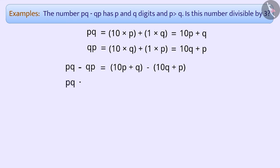This way, pq - qp is equal to 10p + q - 10q - p, which is equal to 10p - p + q - 10q, which is equal to 9p - 9q, which is equal to 9(p - q).